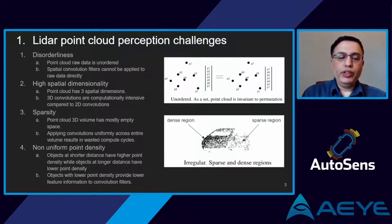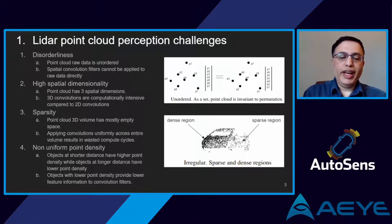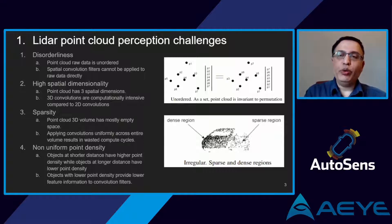Point cloud data presents a unique set of challenges for perception using convolutional neural networks. The first challenge is that the raw point cloud data is unordered. When you read points from a point cloud stream, you receive points in a sequence, but those points are not guaranteed to be next to each other in 3D space. 2D and 3D spatial convolution filters need the points to be adjacent, so it is not possible to apply spatial convolution directly to unordered point cloud data.